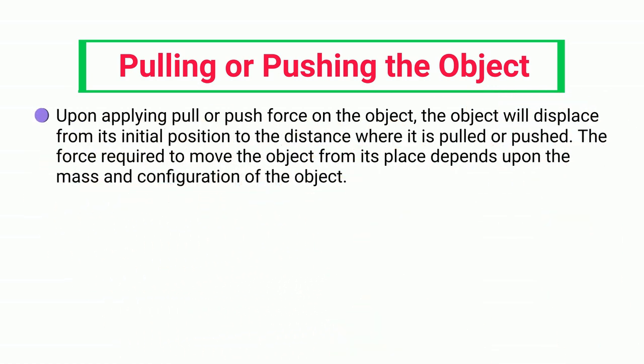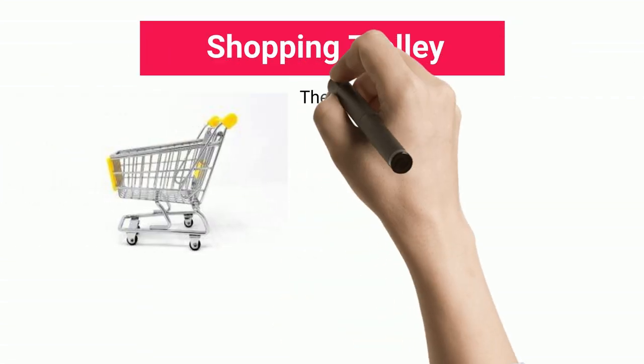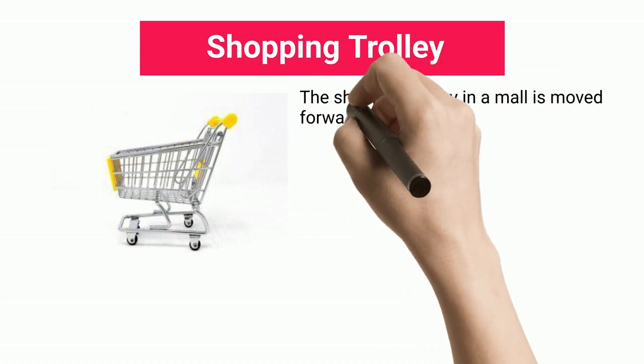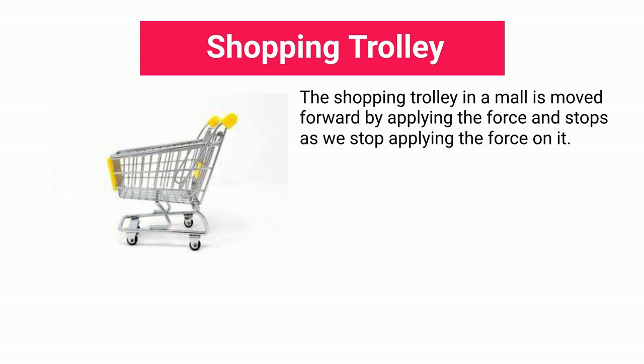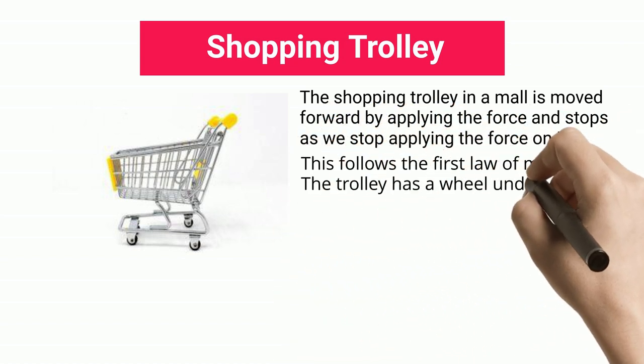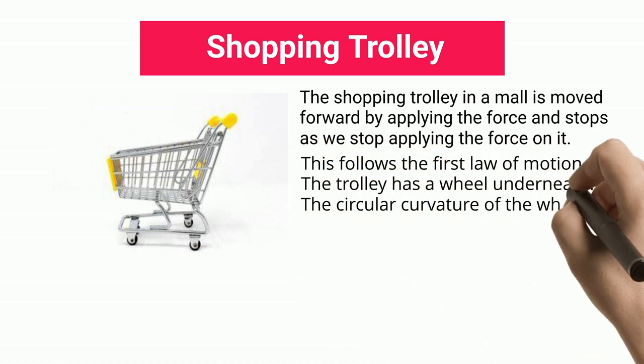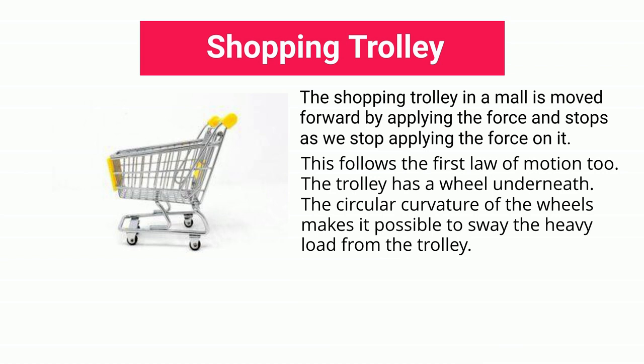Shopping trolley: The shopping trolley in a mall is moved forward by applying the force and stops as we stop applying the force on it. This follows the first law of motion. The trolley has a wheel underneath; the circular curvature of the wheels makes it possible to sway the heavy load from the trolley.